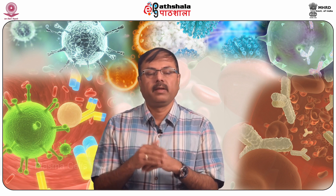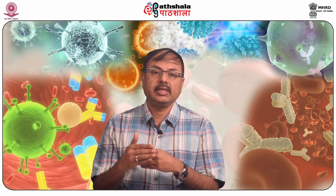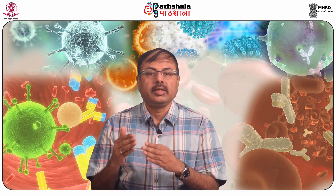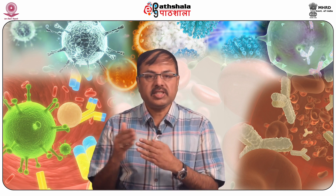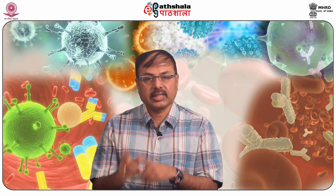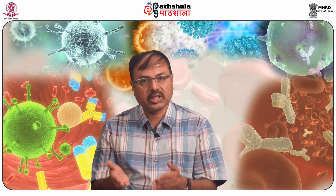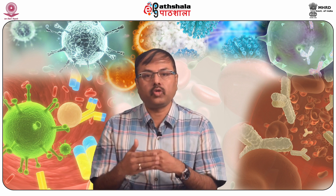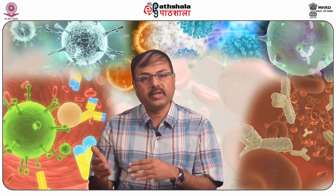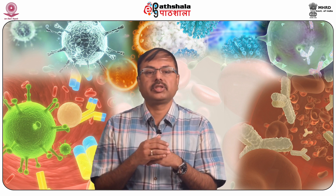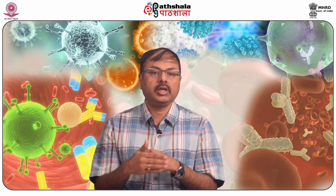Plasma cells are the activated B cells responsible for the production and secretion of antibodies. This secretion gives rise to the antibodies found in circulation. Immunity is maintained for as long as plasma cells continue to secrete antibodies. Memory B cells are also formed after stimulation. These cells migrate to the lymph nodes, where they remain ready for a further round of activation should the same antigen ever be encountered again.